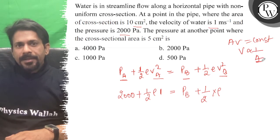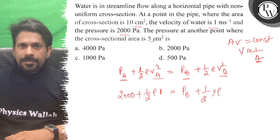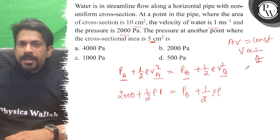If the area becomes 1/2 times - see, 10 to 5 - the velocity becomes 2 times. So vb is twice of va.